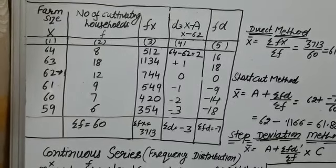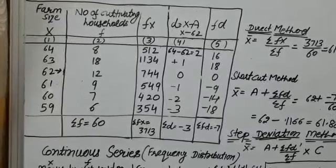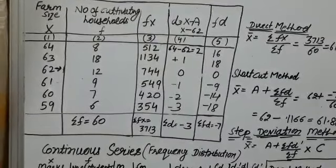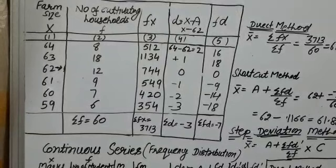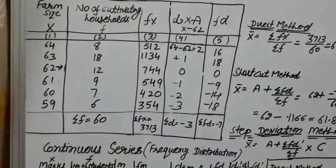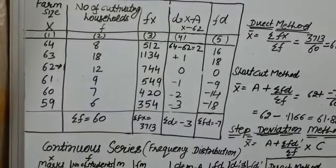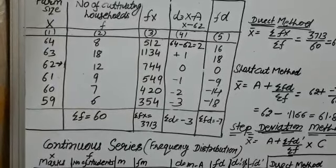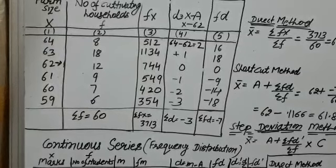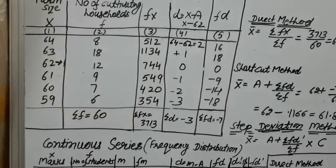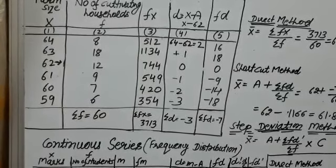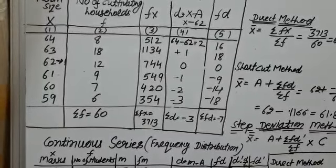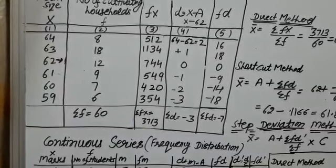First of all, we will calculate arithmetic mean by direct method. According to direct method, we will multiply frequency with farm size, that is x. We will calculate fx. So it is 512, 1134, 744, 549, 420, 354. Sigma fx is equal to 3713.